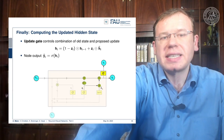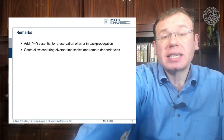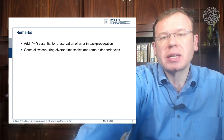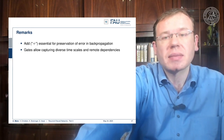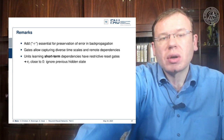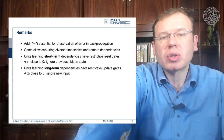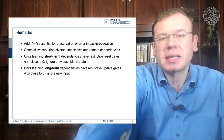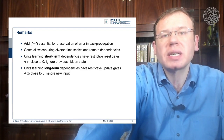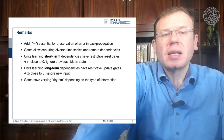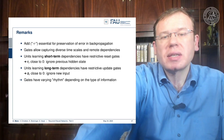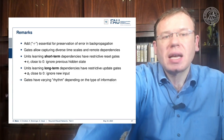Some remarks: the additive structure is essential for preserving the error during backpropagation. The gates allow capturing diverse time scales and remote dependencies. The units can learn short-term dependencies with r_t close to zero, ignoring the previous hidden state, and long-term dependencies with z_t close to zero, ignoring new input. The gates have varying rhythm depending on the type of information.